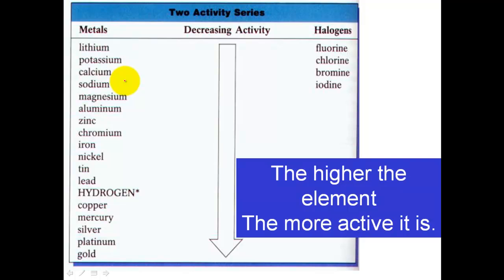The more active metals are located at the very top of the columns, so lithium and potassium are both very active metals. On the other side, fluorine and chlorine are both very active non-metals. The key with the activity series is that any time you have a single replacement reaction, the higher element can replace a lower element. I'll demonstrate this during the video.